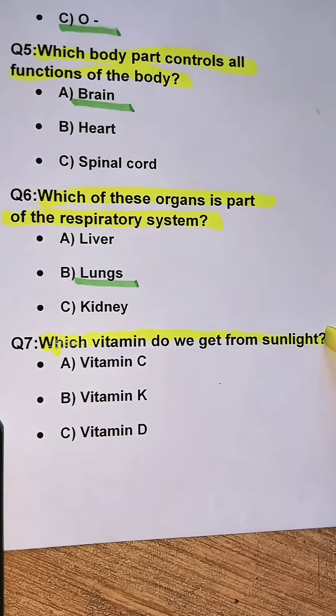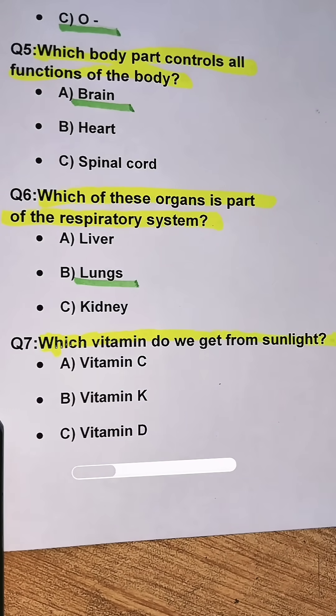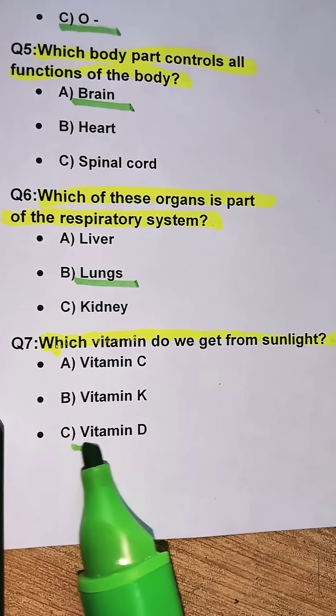Question 7. Which vitamin do we get from sunlight? Option C. Vitamin D.